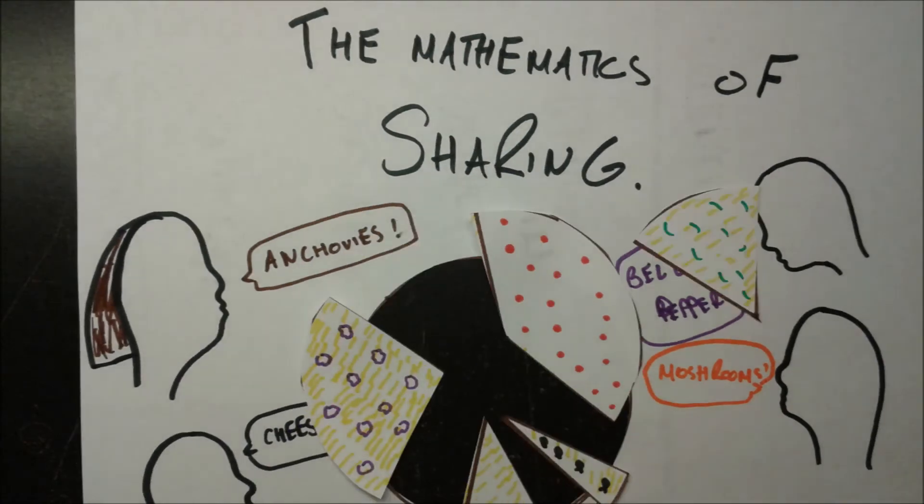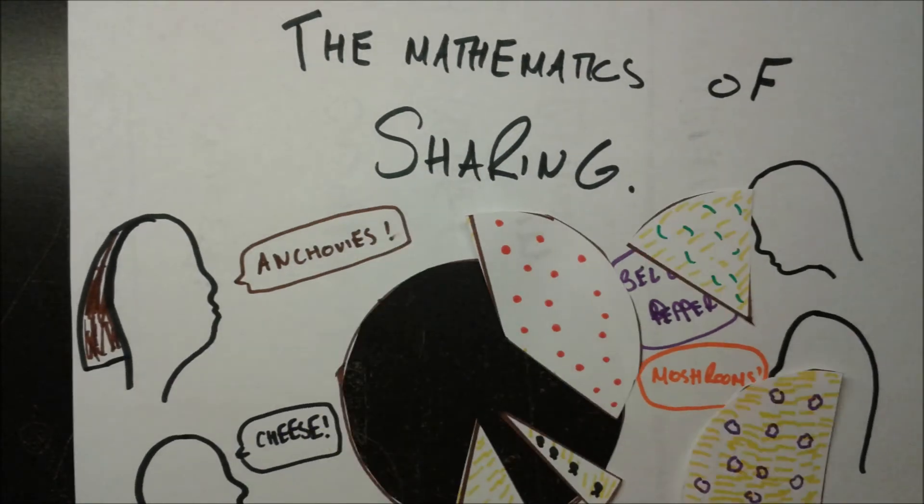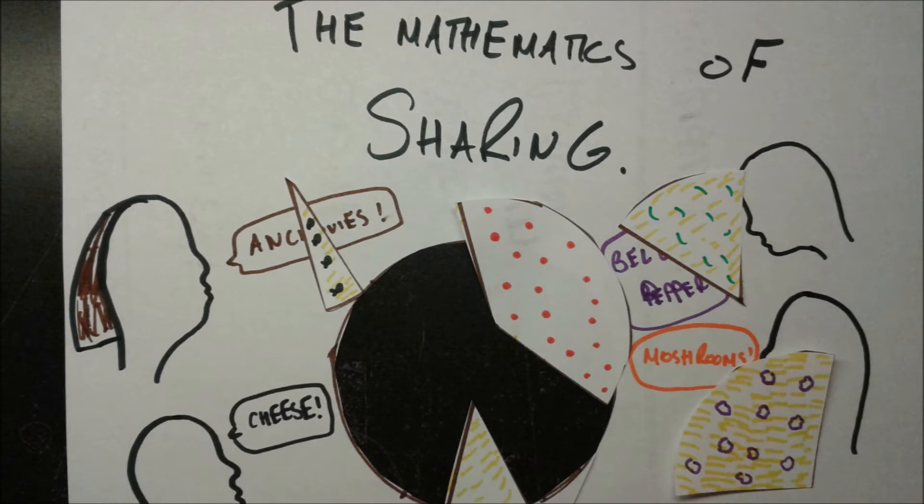Bell pepper person gets bell peppers, mushroom person gets mushrooms, anchovies person gets the anchovies, and the cheese person gets the remaining cheese slice.